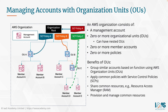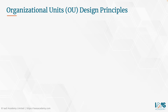You can also provision and manage common resources - deploying common centrally managed resource configurations to groups of related accounts. For example, you can use OUs to automatically deploy a set of IAM policies to establish a common baseline security control for a group of related accounts. And finally, you can manage costs and benefit from volume discounts using the consolidated billing feature. When it comes to designing organization units, there are certain design principles that you need to follow.